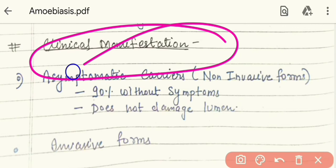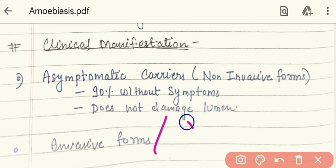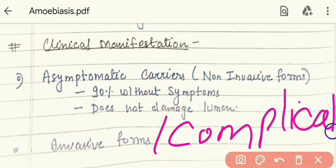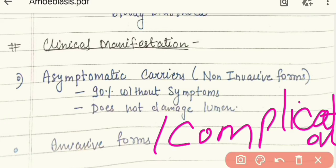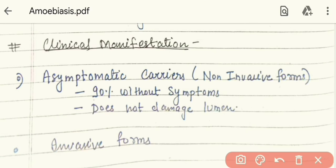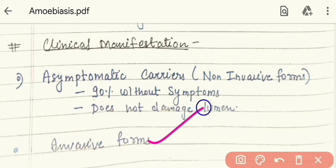Now we know about clinical manifestations. There are two types of forms. The asymptomatic form is called non-invasive form — about 90% of amoebiasis cases are asymptomatic, causing no tissue damage, no luminal damage, and no blood production. The other type is the invasive form, which is very complicated. In the invasive form, trophozoites invade the mucosa and submucosa layer, destroying tissues and blood vessels. This can lead to further complications.